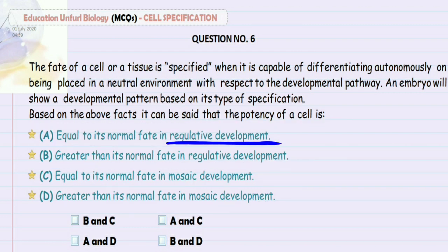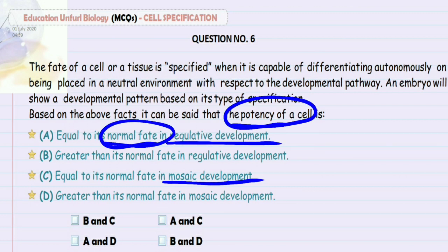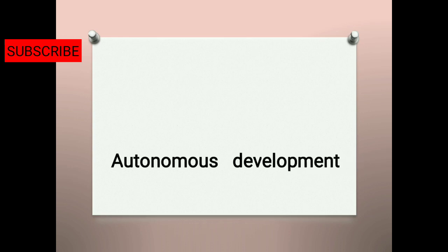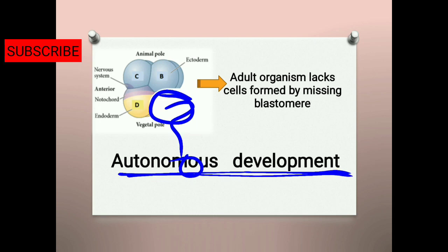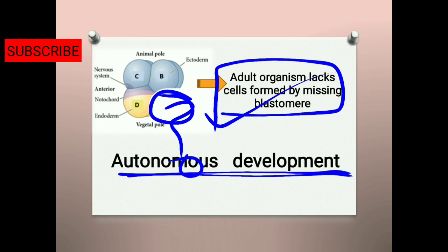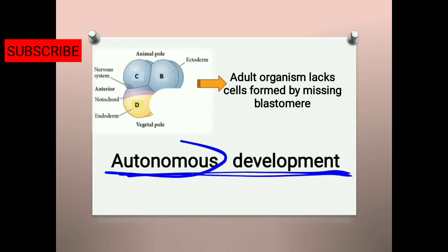Here we have the terms regulative development and mosaic development, along with the concepts of potency and normal fate of the cell. In autonomous specification, if parts of the embryo — certain blastomeres — are missing, then the adult organism will be missing the structures those blastomeres would have created. This type of development is called mosaic development, because autonomous specification leads to mosaic development.